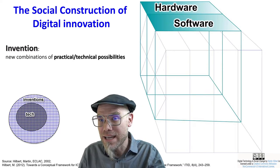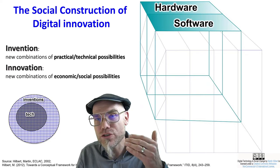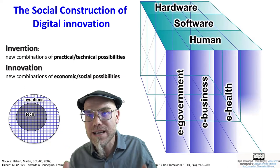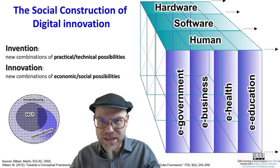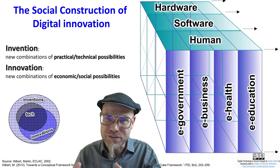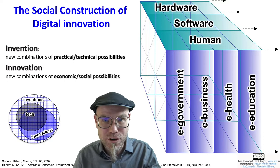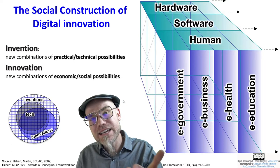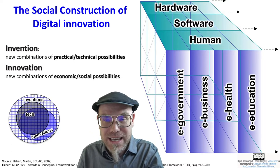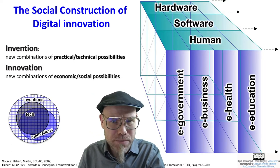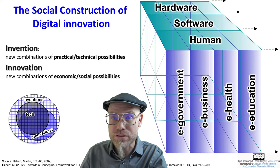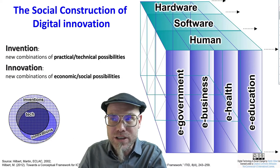Then we look at the second part: how that leads to innovation — new combinations in the realm of society and the economy. We are bringing parts of information, communication, and knowledge processes into electronic networks. Technology is increasing its reach into these innovations, especially through digitalization and algorithmification.